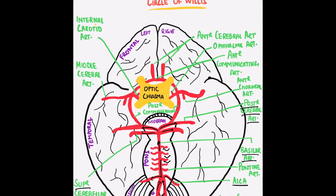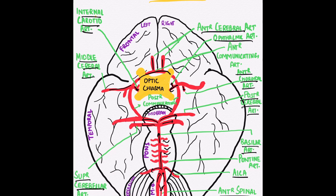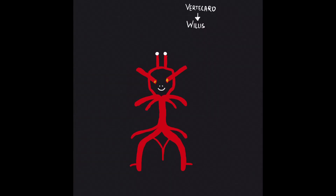Twenty percent of blood supply to the brain is made by the vertebrobasilar system of arteries, whereas the internal carotid artery, arising from the common carotid artery, supplies 80% of blood to the brain. This internal carotid artery has four main branches in the brain: the ophthalmic artery, anterior choroidal artery, middle cerebral artery, and the anterior cerebral artery. These form the anterior portion of the Circle of Willis. The posterior communicating artery connects the middle cerebral artery to the posterior cerebral artery, whereas the anterior communicating artery connects both anterior cerebral arteries.